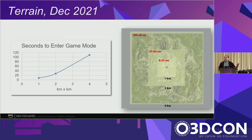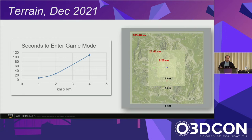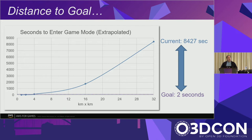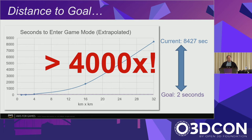The problem is that at the end of last year, in O3DE's first major release, we had terrain as a proof of workflow — you could author and build it, but it definitely wasn't ready for production. Our easy metric was how many seconds it took to get into game mode. For a one square kilometer terrain, it took eight seconds. It scaled exponentially: at four by four kilometers it was almost two minutes. Extrapolating out to 16 kilometers, it would take 8,400 seconds — over two hours. Our goal is two seconds. We need to optimize this by 4,000 times.